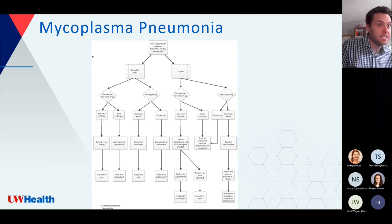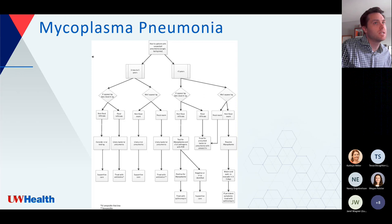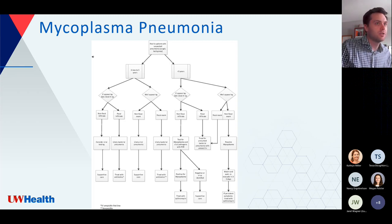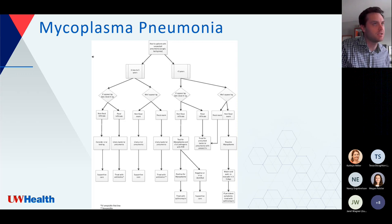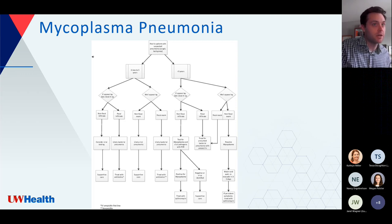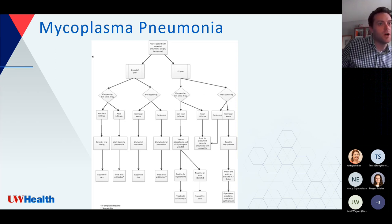In children under age five, community-acquired or viral pneumonia is more likely. If you find focal infiltrate or focal crackles, treat for community-acquired pneumonia and avoid azithromycin. In older, well-appearing children with non-focal findings, you can watch and wait, do testing, or empirically treat if symptoms are persistent and consistent with mycoplasma pneumonia.